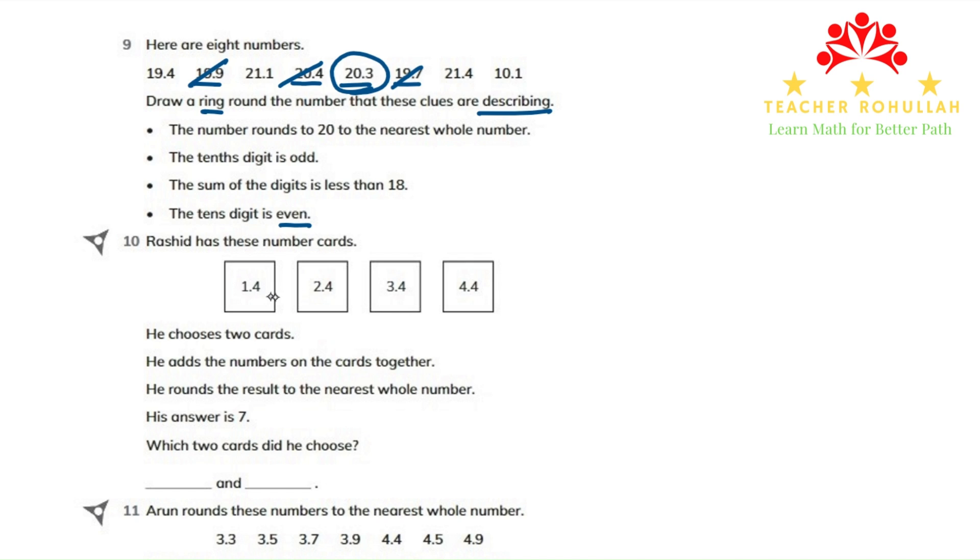1.4 and 2.4 cannot be. 2.4 and 3.4 can also not be because it's 5. It cannot be rounded to 7. 3.4 and 4.4 is 7.8. It can also not be.